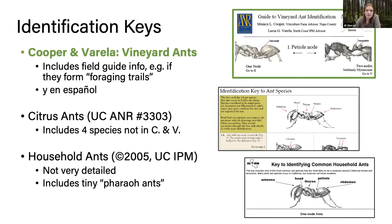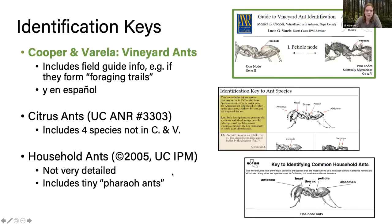There are a couple of identification keys for vineyard ants on the IPM websites. The one I really want to emphasize is put together by Monica Cooper and Lucia Varela on vineyard ants specifically — it includes great field guide information such as whether ants form foraging trails. There's also a key to citrus ants which includes four species not in the Cooper and Varela key, and one for household ants. It must be stated that these keys do not include every ant you might encounter in a vineyard — they're only for the pest species, because California is home to many, many ant species.